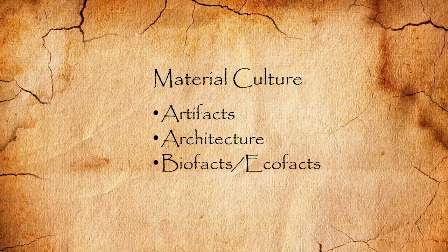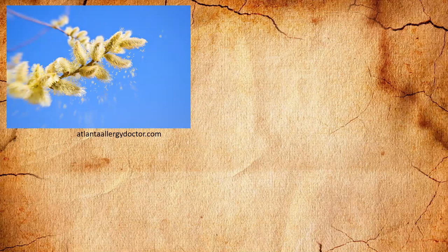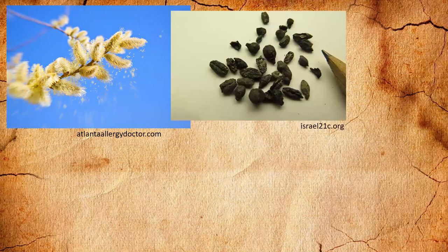Not just things that are made by man — we also will often find natural objects found side by side with the artifacts, but they'll still give us some context in terms of the archaeology. Those are biofacts and ecofacts. Biofacts are going to be organic in nature. Some examples of biofacts: you have pollen, which in many cases is used to determine what region something came from based on the sorts of flowers that produce the pollen. We have seeds.